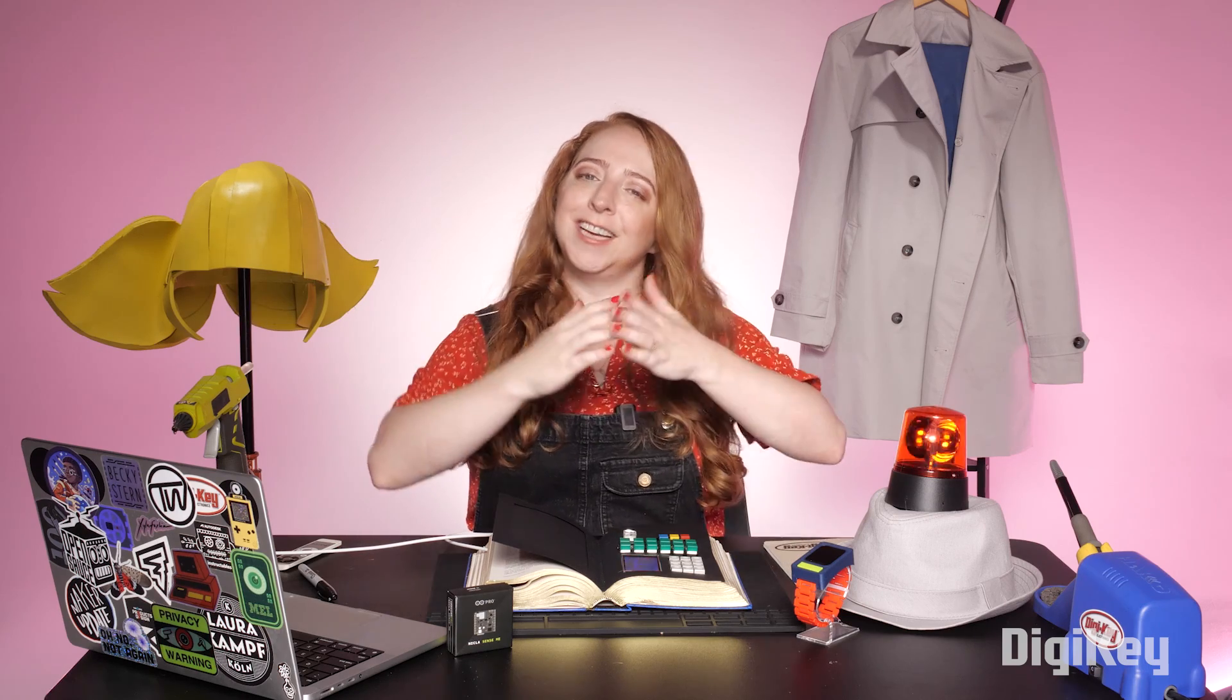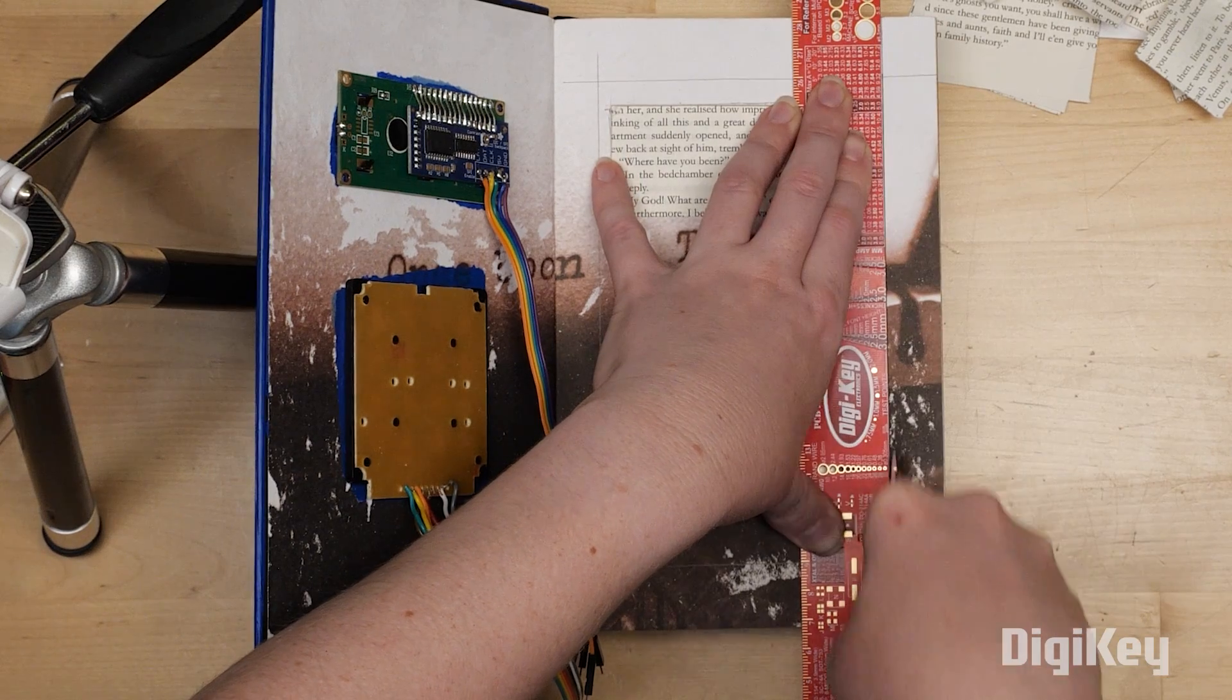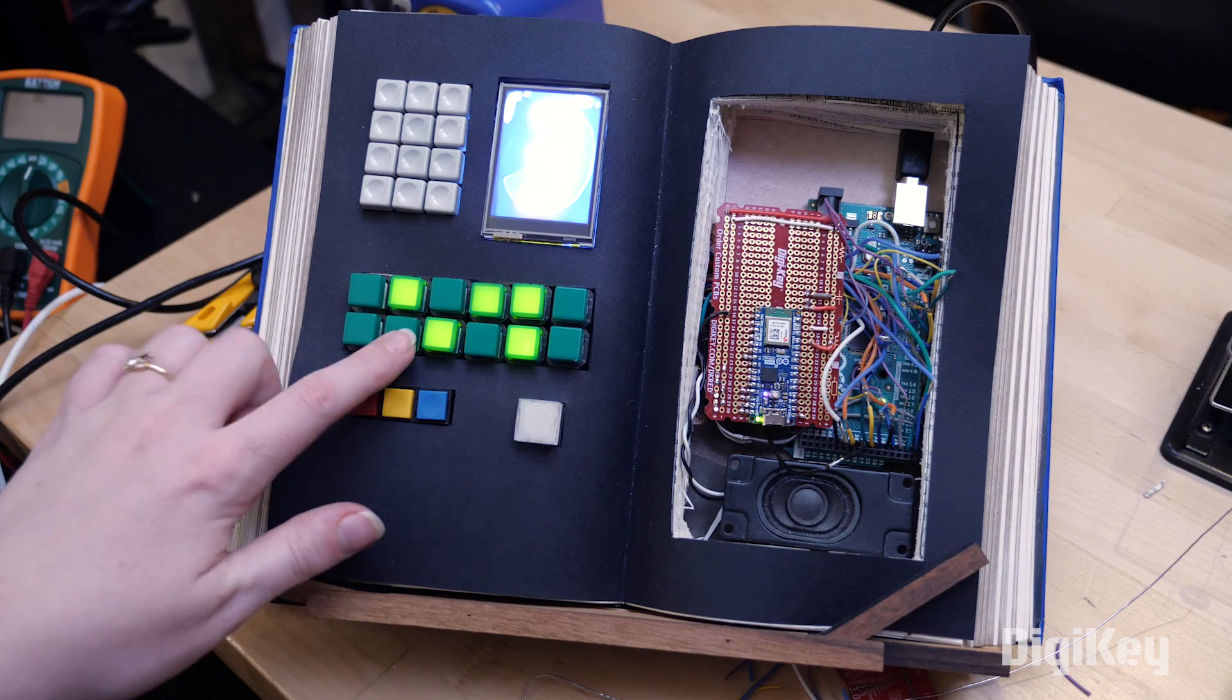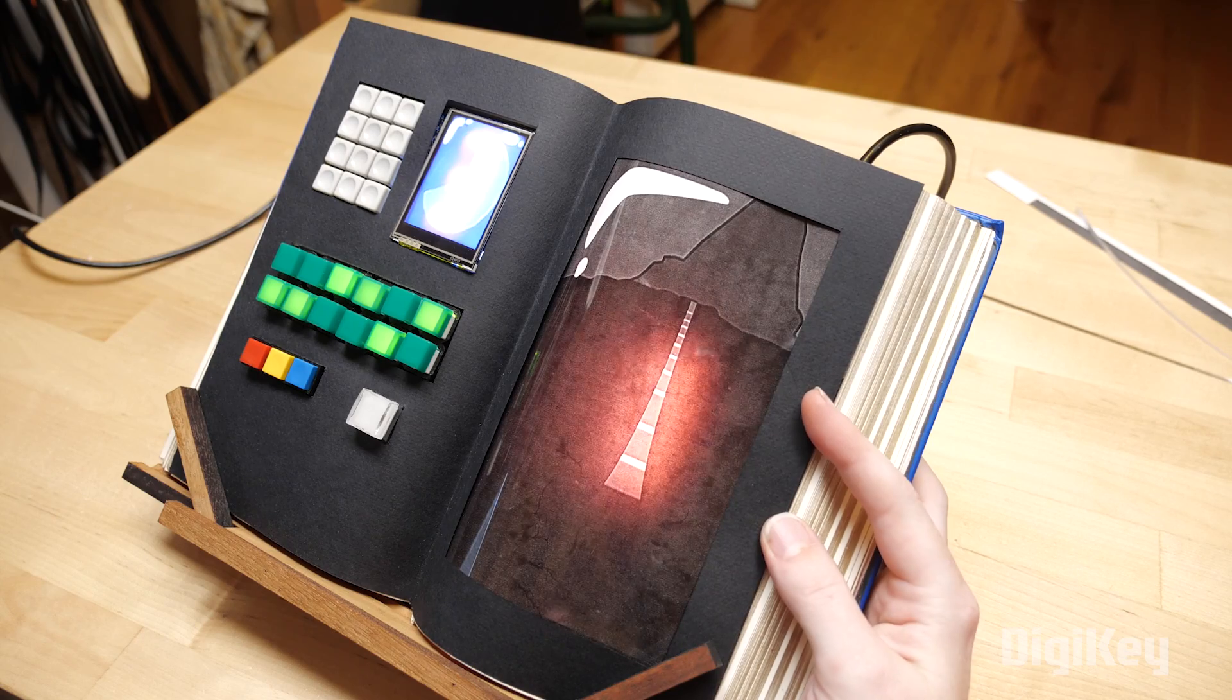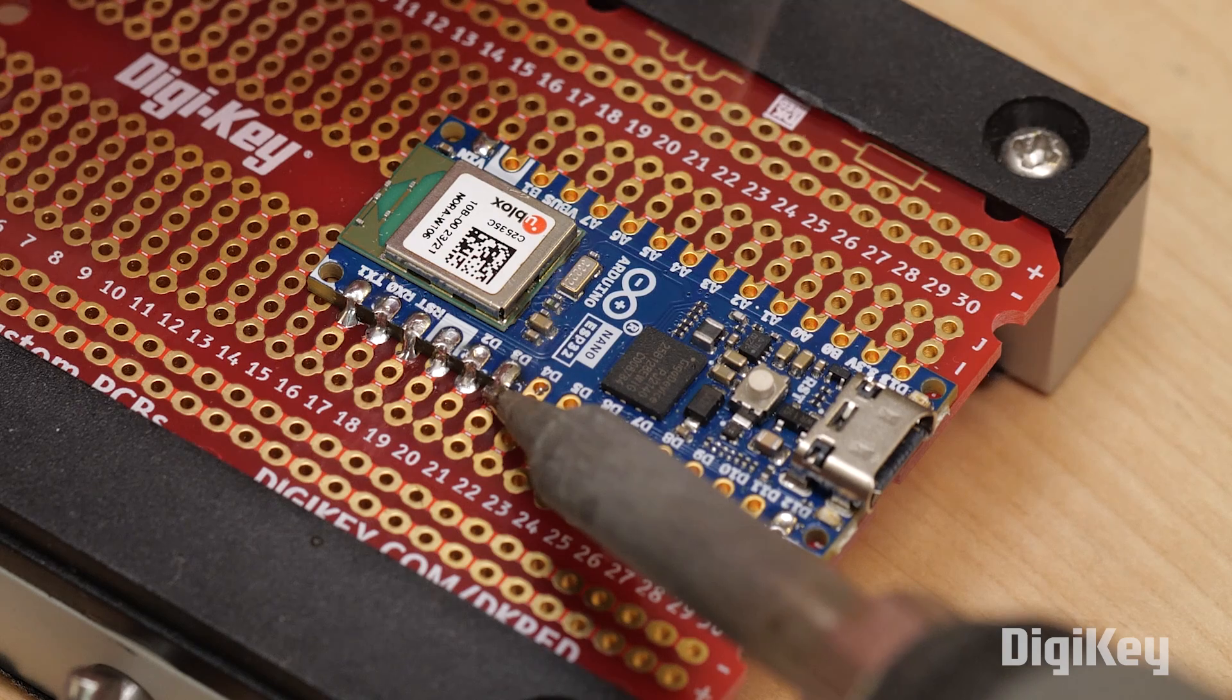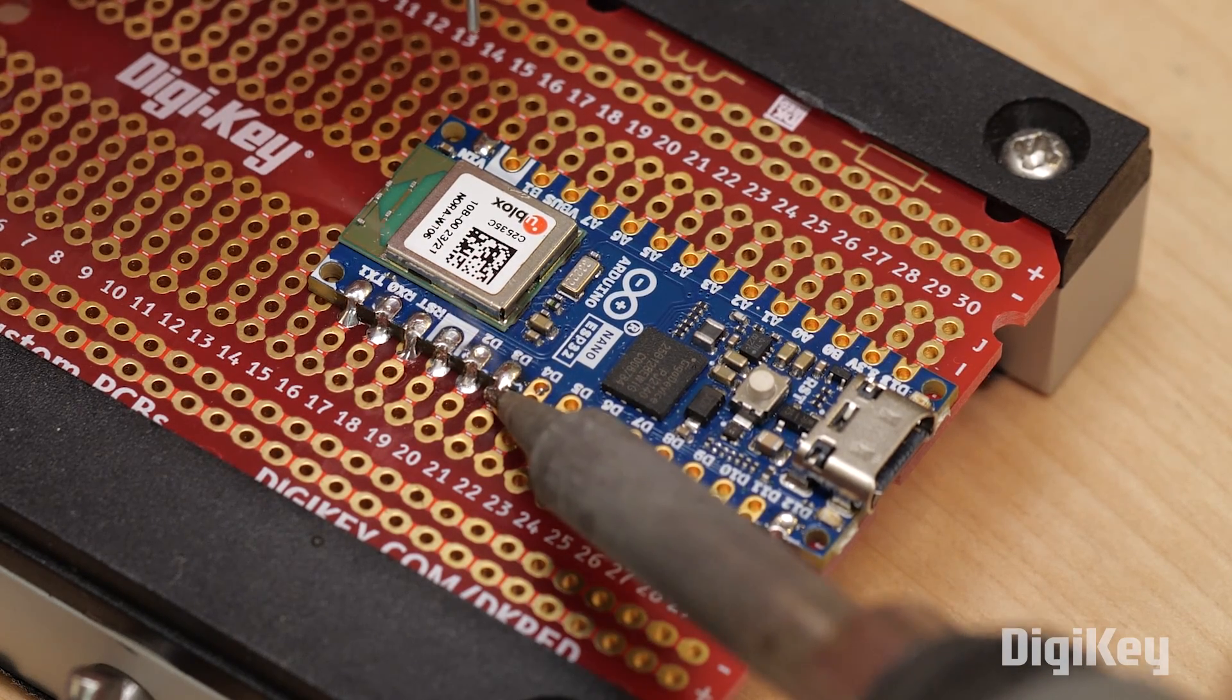Hi, I'm Becky Stern, and I'm here today with a special Arduino project. It's a replica of Penny's computer book from Inspector Gadget. I carved out a real book to fill it with electronics that look and behave like the book in the cartoon. It's powered by an Arduino Nano ESP32, which is available at Digikey. Come with me to my home studio to follow along with the build.